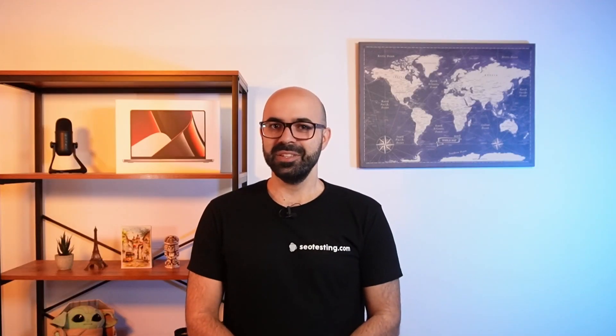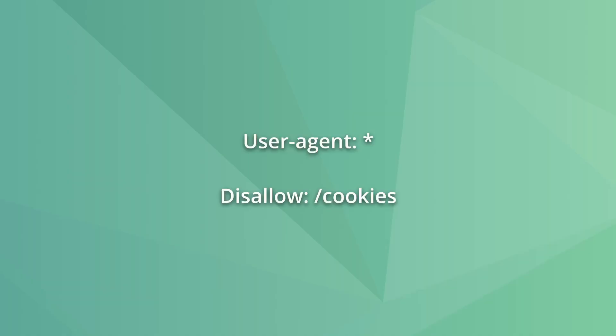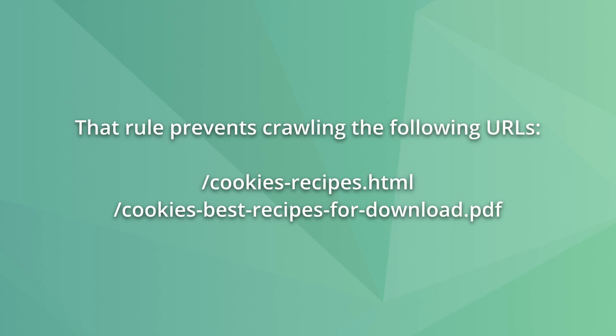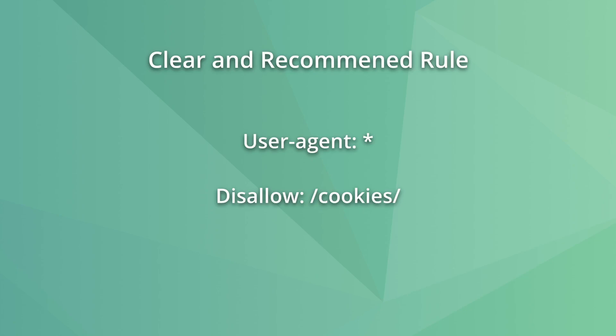Tip number three: be specific. Being specific in the robots.txt pays off and prevents unintentional consequences of bots not crawling essential sections of your site. For example, if you don't want bots to crawl the cookies folder and create a disallow rule, that rule will also block every URL containing /cookies. You should end the expression with a trailing slash to make the directive clearly target only that directory.